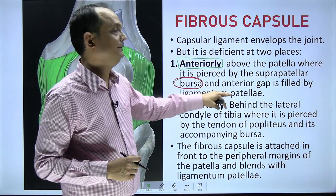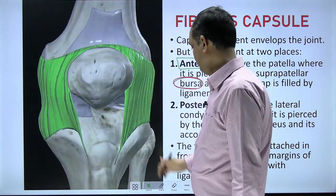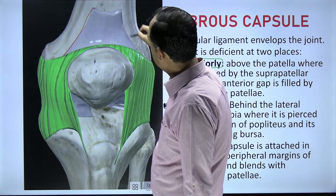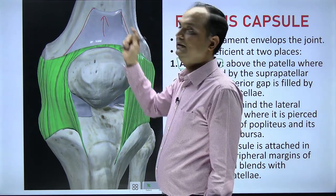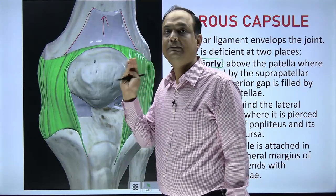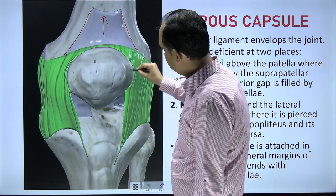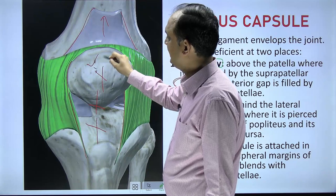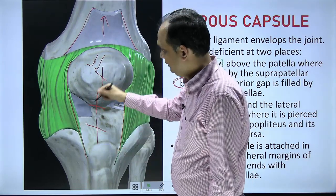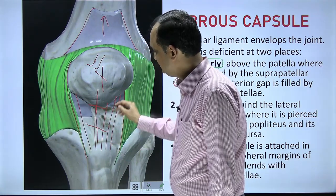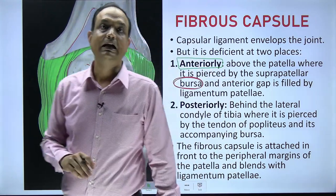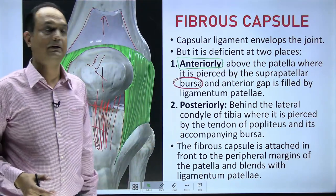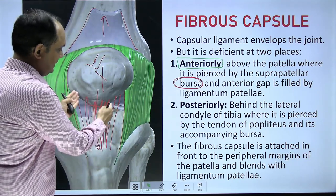The anterior gap in the capsule is filled by the ligamentum patellae. In this image you can see the suprapatellar bursa protruding upward from the cavity — this bursa prevents friction between the tendon of quadriceps femoris and the bone. The margin of the capsule is visible here; in the middle portion there is no capsule, as it is occupied by the patella, and below that area you have the ligamentum patellae.